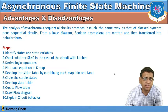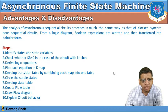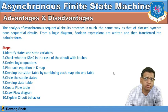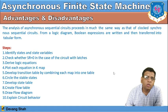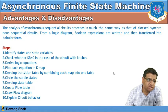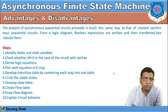The steps for designing an asynchronous sequential circuit are: Step 1 — identify the states and state variables; check whether SR equals zero for circuits with latches. Then derive the logic equations, plot each equation in a K-map, and develop a transition table by combining each map into one table. Develop the stable states, create a flow table, draw a flow diagram, and finally arrive at the circuit behavior.